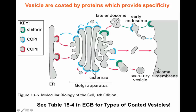Vesicles that need to return from the cis-Golgi network back to the ER are generated by the protein COP1. COP1 is related to COP2, but it makes vesicles destined for retrograde movement — back to the ER or back through the Golgi. A COP1 vesicle generated in the cis-Golgi network will pinch off and travel back to the ER, whereas a COP2 vesicle generated in the ER will move from the ER to the cis-Golgi network.